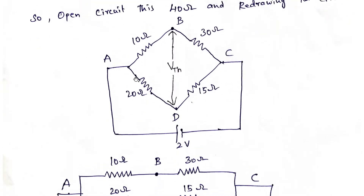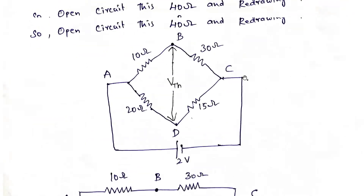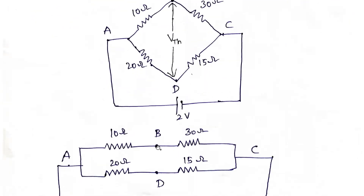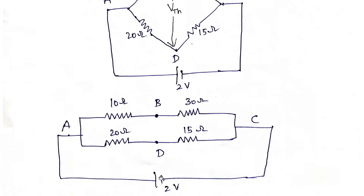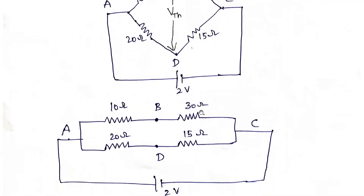What I am doing is I am redrawing the circuit. So if you see here, clearly 10 ohms is here and 30 ohms is here, and this is the B point. This is the D point. 20 ohms is here and 15 ohms is here. This is the A point and C point, connected to 2 volts. We are redrawing this circuit because our calculation will be very simplified if you redraw the circuit.